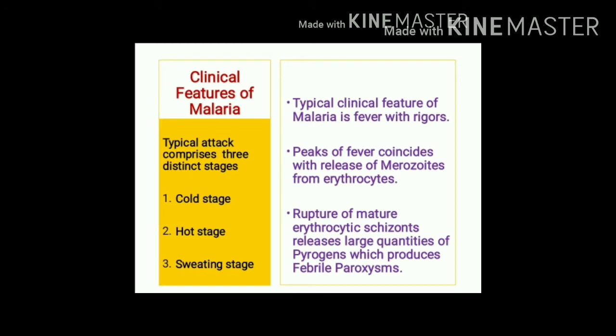The clinical features of malaria include three important stages: cold stage, hot stage, and sweating stage. The most important characteristic feature is fever with rigors. Peaks of fever coincide with release of merozoites from erythrocytes; rupture of erythrocytic schizonts releases large quantities of pyrogens, which produce febrile paroxysms.